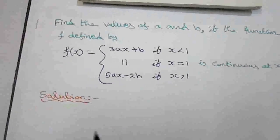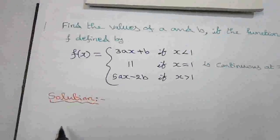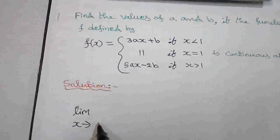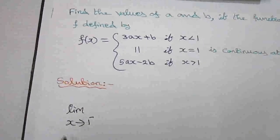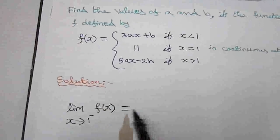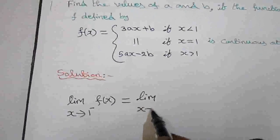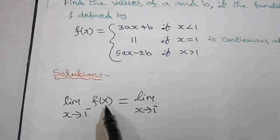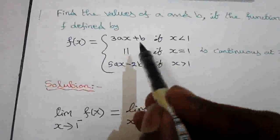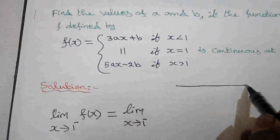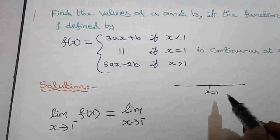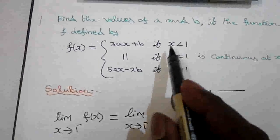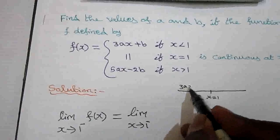Now for continuity I am going to find out the left-hand limit. So the left limit as x tends to 1 minus represents the left limit of f(x). For the left-hand limit, we look at the left-hand side of x equal to 1, which is the region where x is less than 1. The function value there is 3ax plus b.